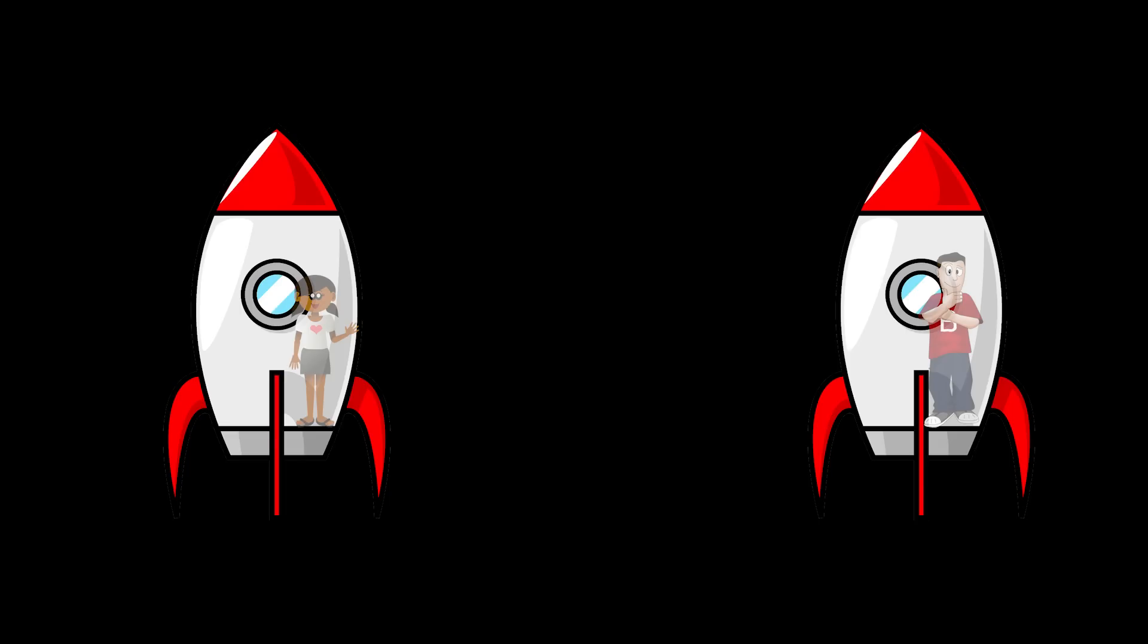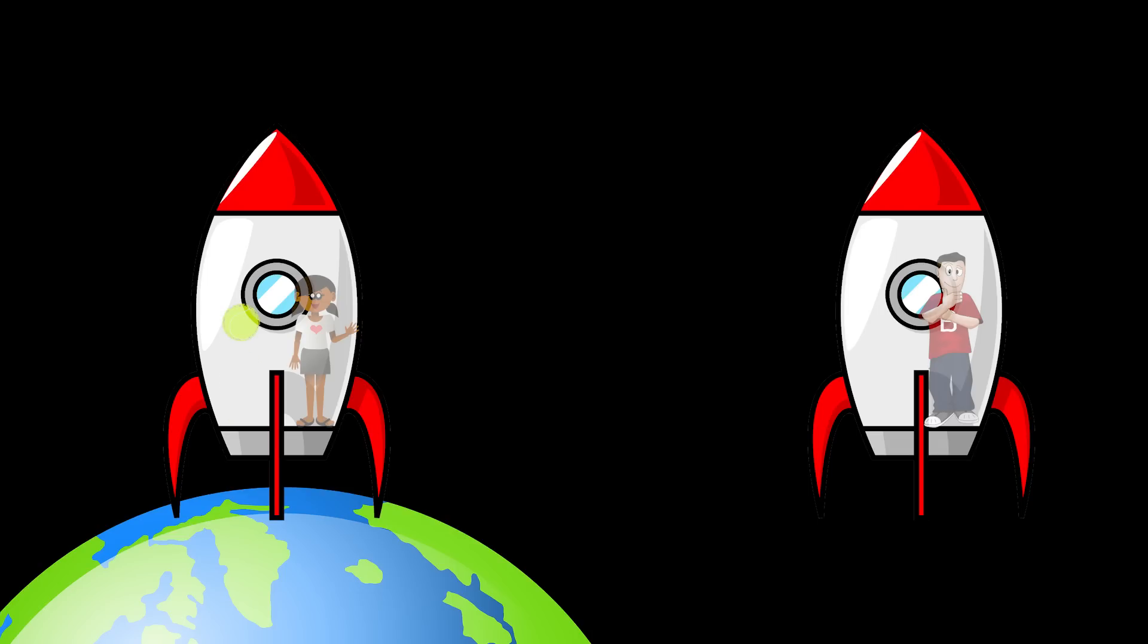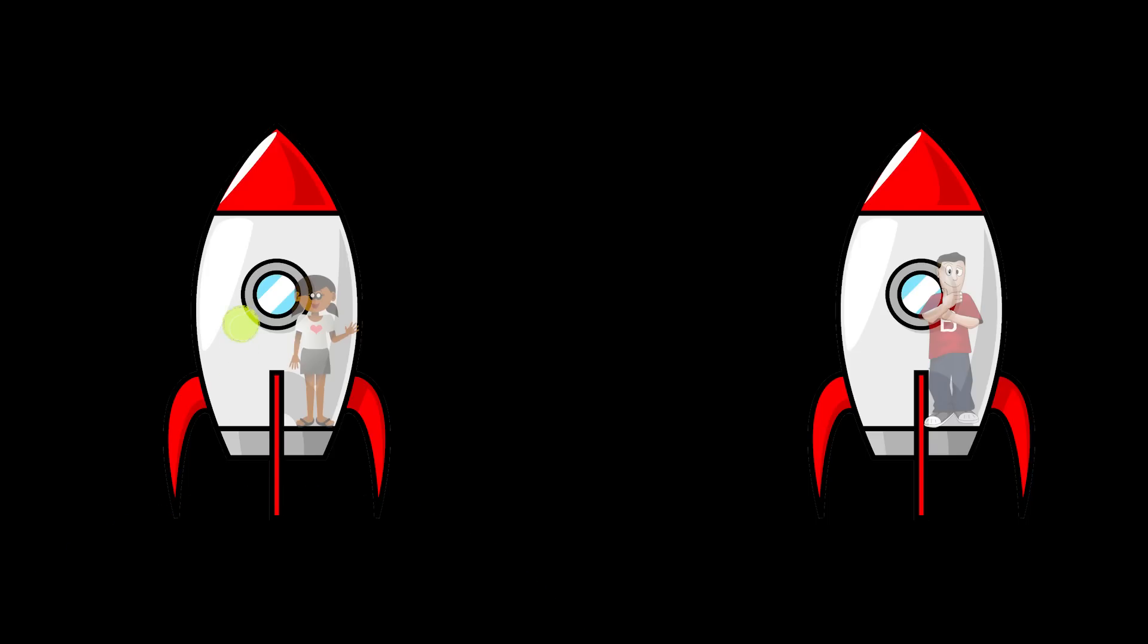Alice and Bob are both in spaceships. They're sealed in and can't see what's going on outside the ships. Alice drops a ball and watches it fall to the floor, accelerating at 1g. Now, here's the question. Is she landed on Earth, or is her ship accelerating up at 1g? As far as any physics experiment performed aboard the spaceship is concerned, there is no difference between those two seemingly very different situations. So why do we use different physics to describe them? Is Alice an inertial observer, one that is not accelerating, at rest on the ground in Earth's gravitational field, or is she an accelerating, non-inertial observer?